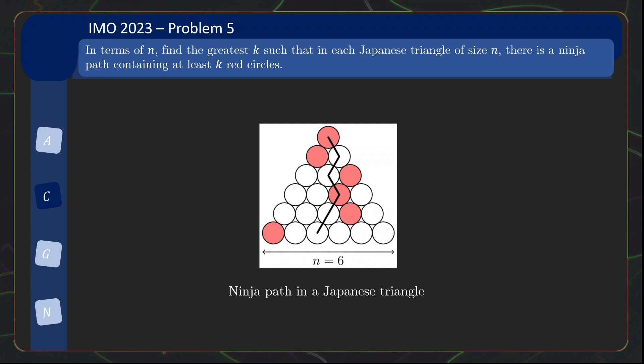It then asks a very natural follow-up question of finding the greatest k, such that no matter the placement of the red circles, we can always find a ninja path containing at least k red circles.